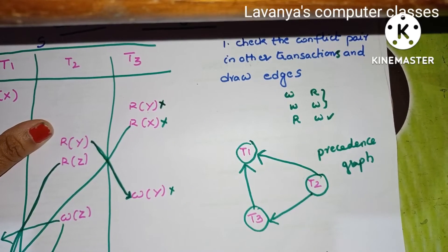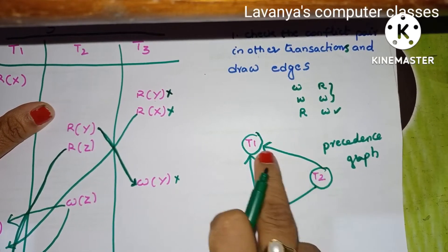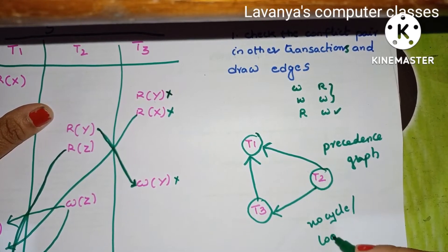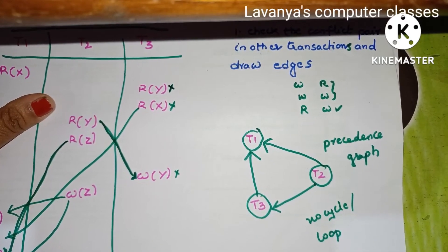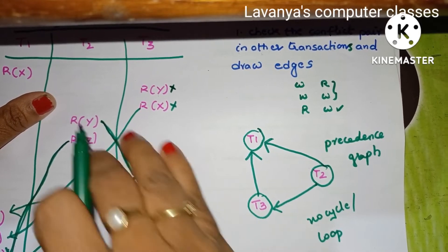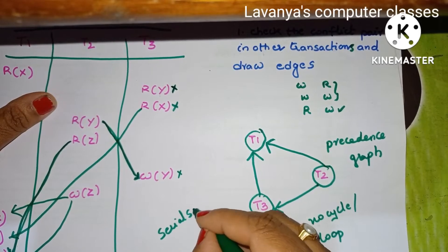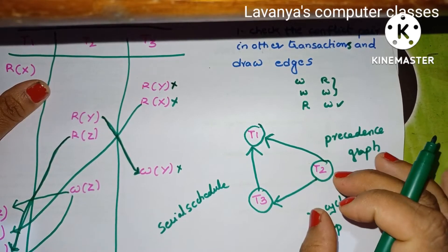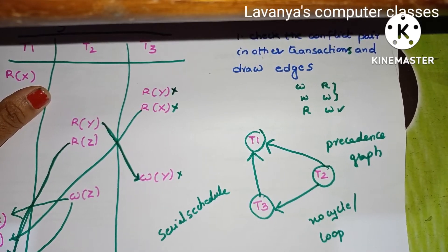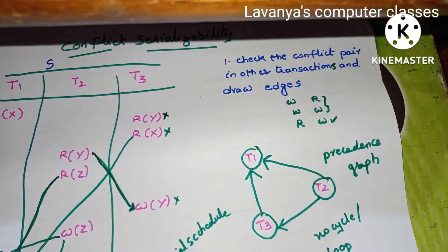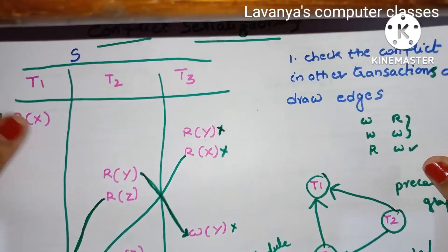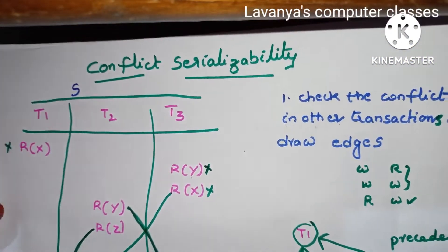After drawing the precedence graph, find out if any loop or cycle is present. The edges are T2 to T1, T2 to T3, and T3 to T1 — but there is no cycle. If no cycle or loop is formed, then it is conflict serializable, meaning it is possible to convert this parallel schedule into a serial schedule. That is the concept of serializability.